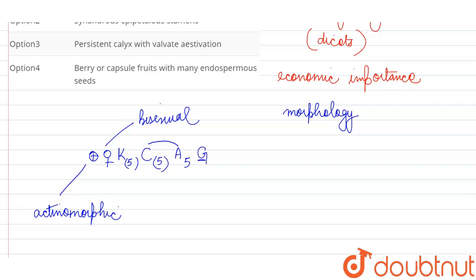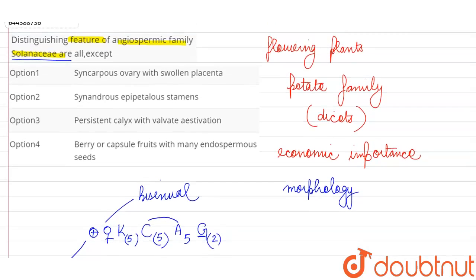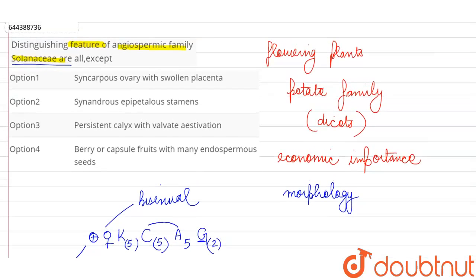And in the gynoecium we will see we have a superior ovary which is bicarpellary and syncarpous. So just by looking at this floral formula we can identify the morphological features of the flower.